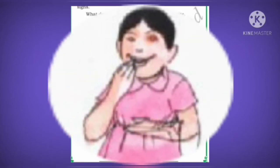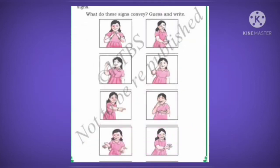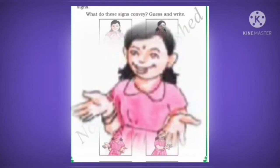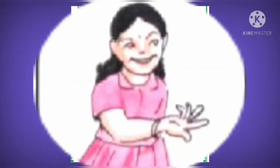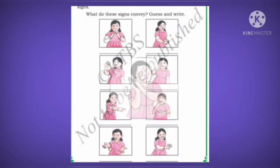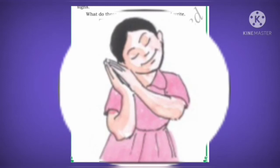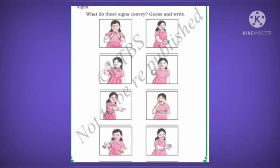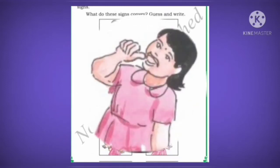The fifth sign conveys the object is there. The sixth sign conveys that she is hungry and wants food. The seventh sign conveys asking what the other person has spoken. The eighth sign conveys how and where. The ninth sign conveys she needs water to drink.